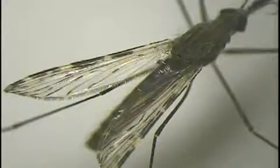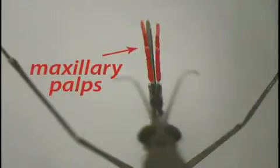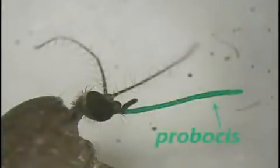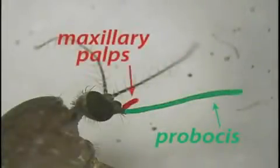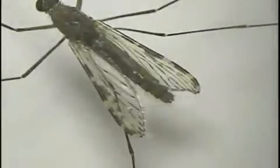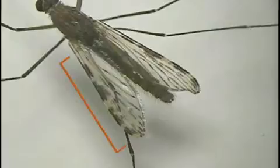There are three main features that can be used to distinguish between anophelines and culicines: the maxillary palps, the wings, or the resting position of the adult mosquito. Only female species of the genus Anopheles have maxillary palps that are as long as the proboscis. The culicine proboscis is much longer than its palps. The wings of Anopheles species have characteristic pale and dark bands. Culex or Aedes mosquitoes do not have wings spotted with dark and pale bands.